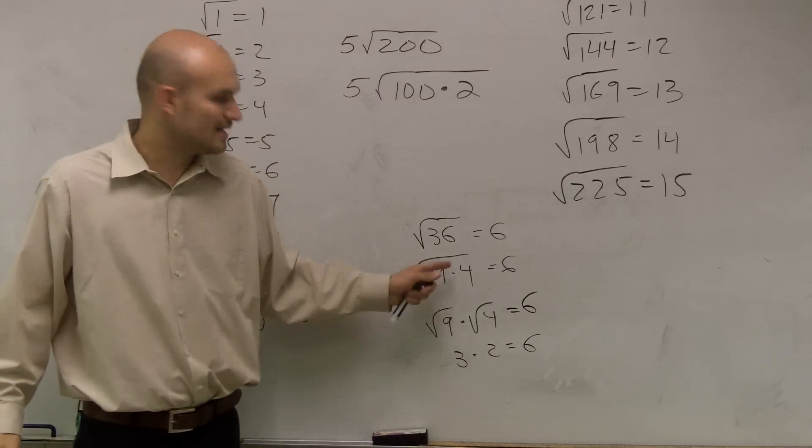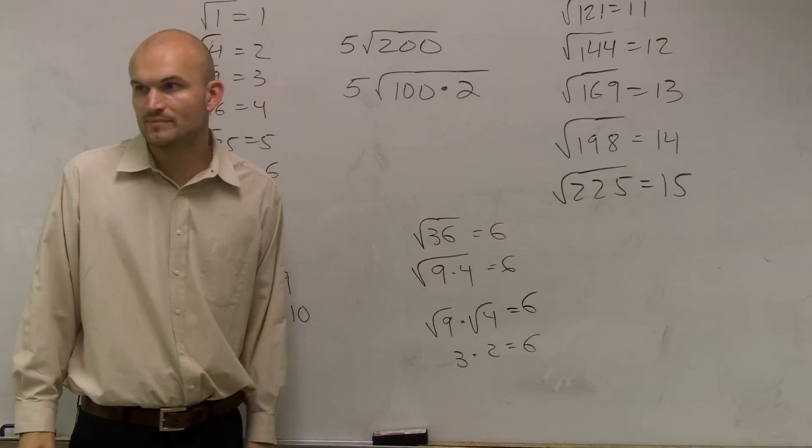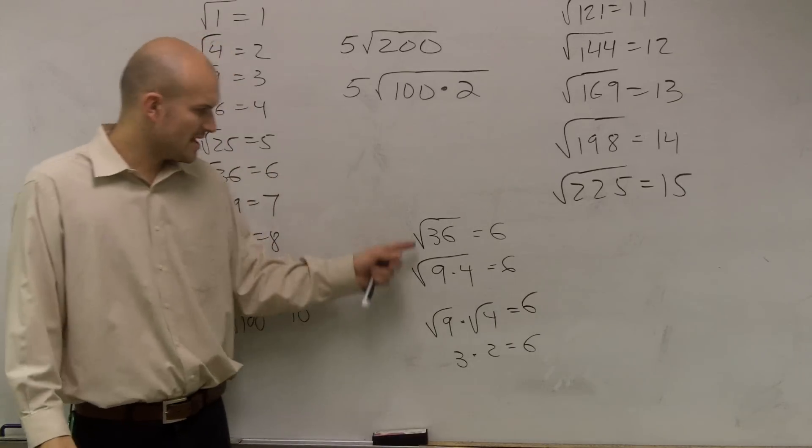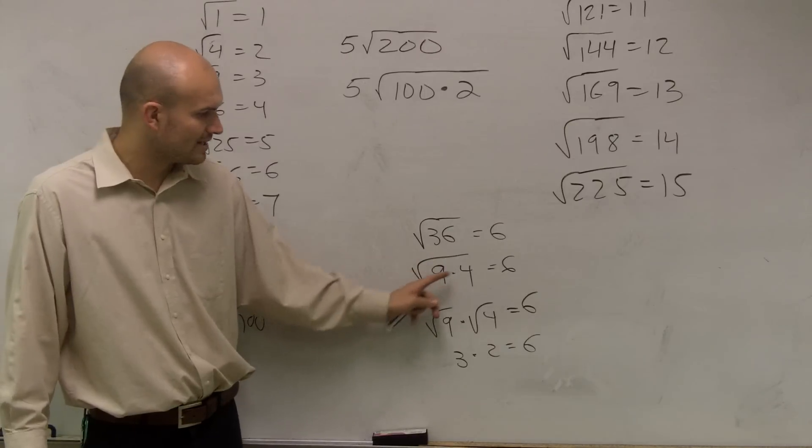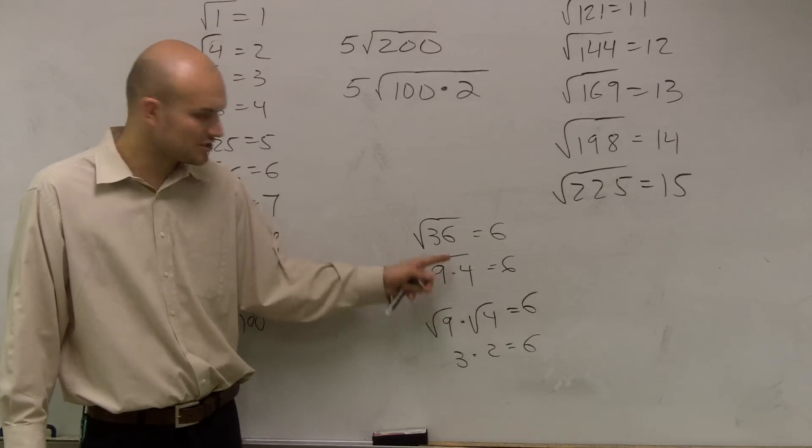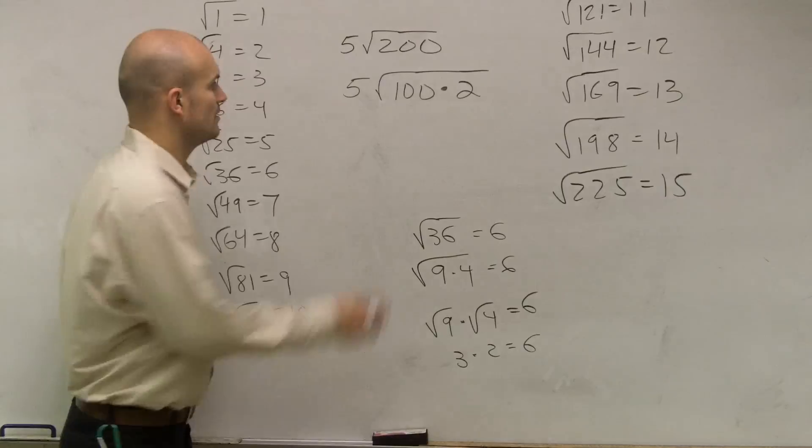Either way I represent it, I still get my answer is 6, right? Does everybody see how I did that? It doesn't matter which way I write it. The square root of 9 times 4, what I'm saying is I can break this up. As long as there's multiplication going on, I can break up the square root of 9 times the square root of 4.